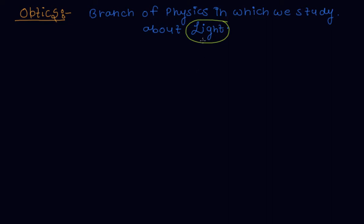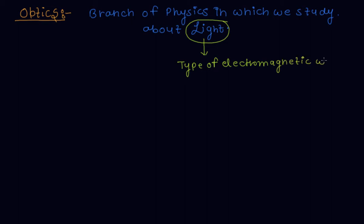So basically, the answer is: light is a type of electromagnetic wave which are visible to us.